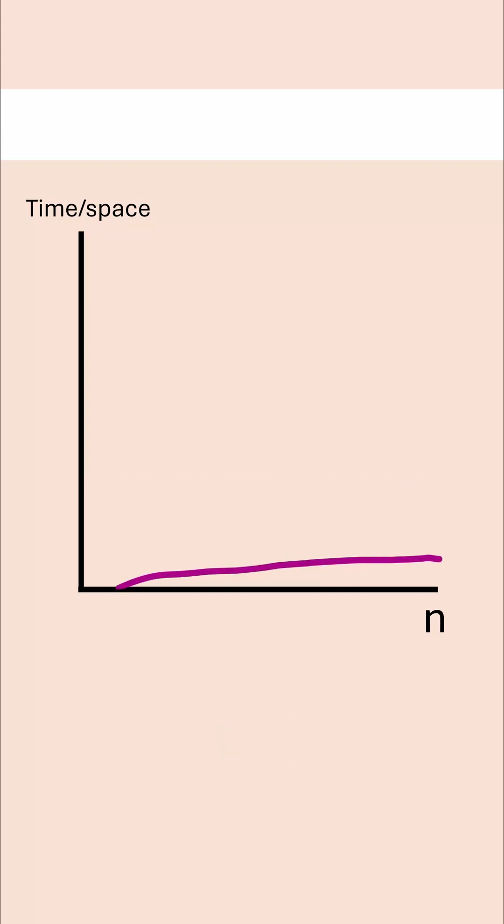The next graph is very flat and becomes even more flat as n goes up. This is logarithmic complexity written as O(log n). This is our dream - this is what binary search has. Linear search has this graph, so this is our linear time complexity. Performance is directly proportional to the input size, and we write it as O(n).